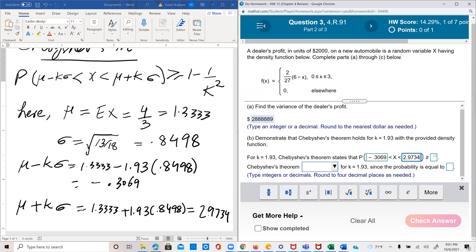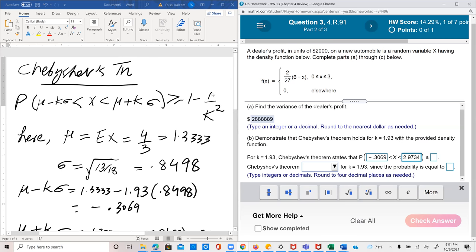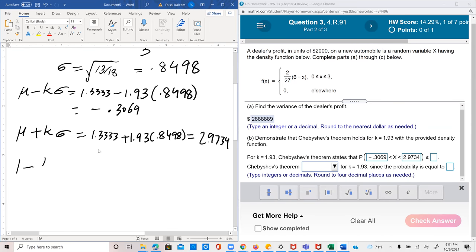So we can fill in these numbers. So probability x is between negative 0.3069 and 2.9734 needs to be greater than or equal to 1 minus 1 over k squared. So 1 minus 1 over 1.93 whole squared equals 0.7315.